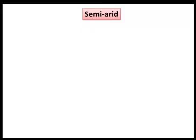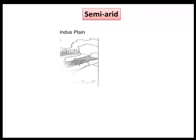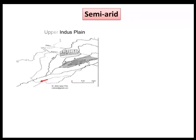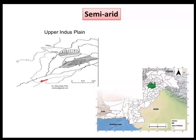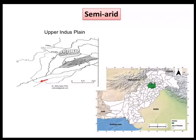Semi-arid: the areas of the upper Indus plain and Potohar Plateau lie in this region. This region has hot summers, cool winters, and monsoon rains.